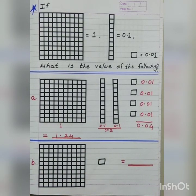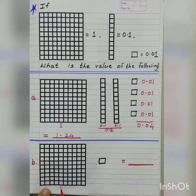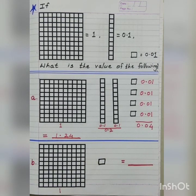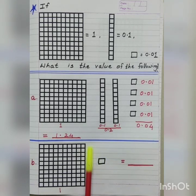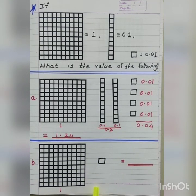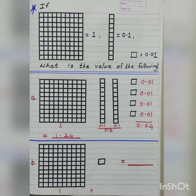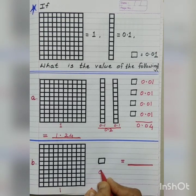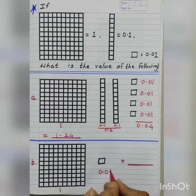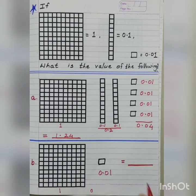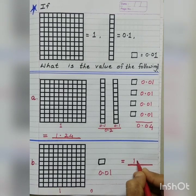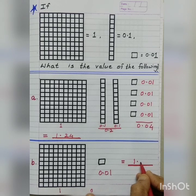Next example. Grid of 100 is 1 whole. Grid of 10 is not given, so we put 0 in its place. One separate box which is 0.01. Now, we can write our number as 1.01.